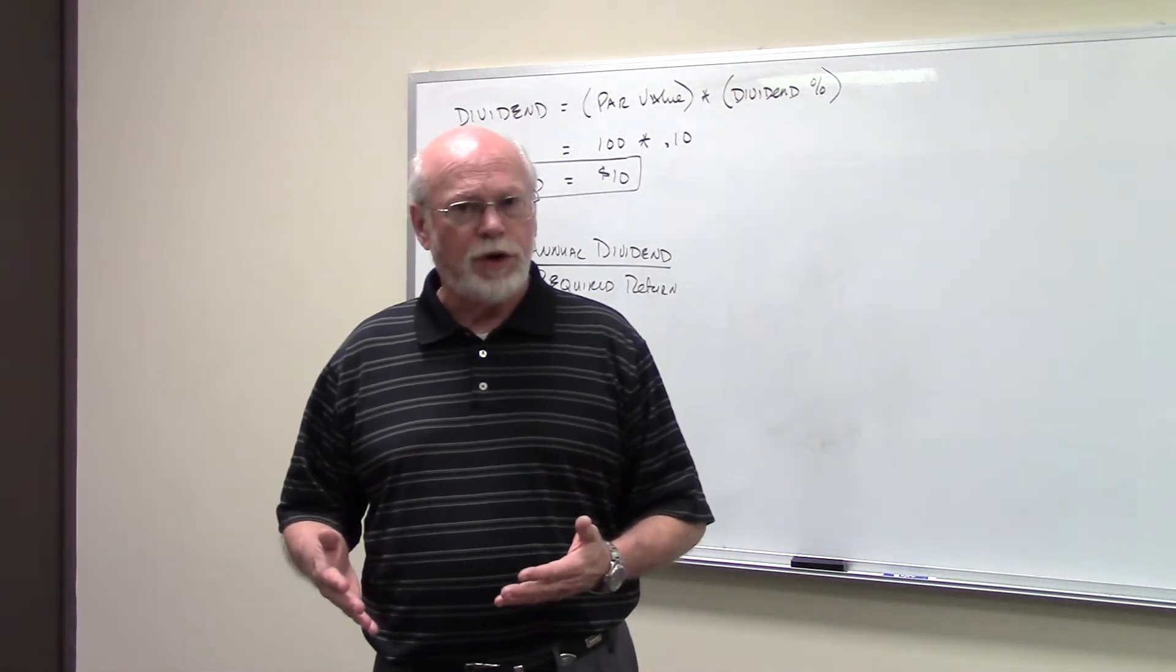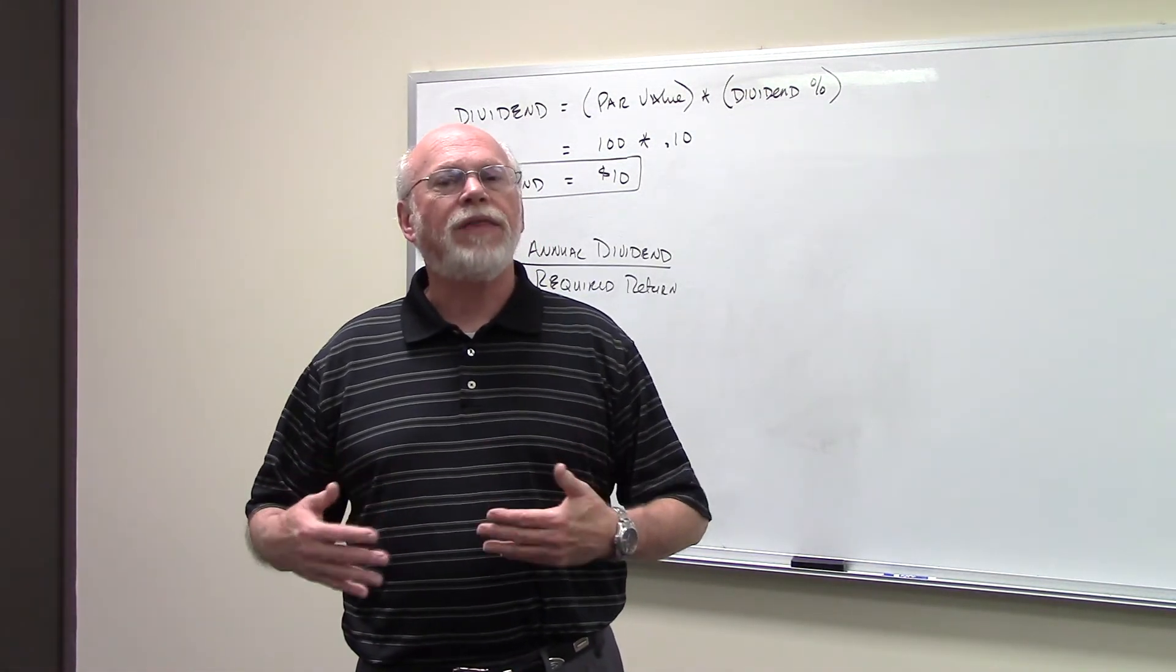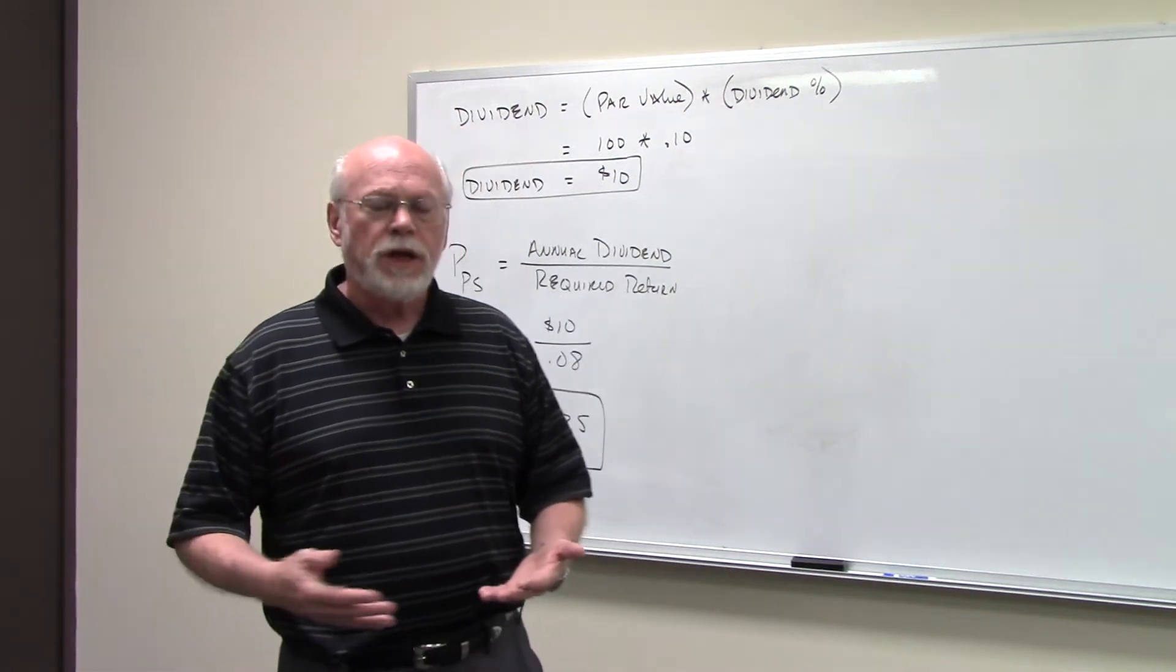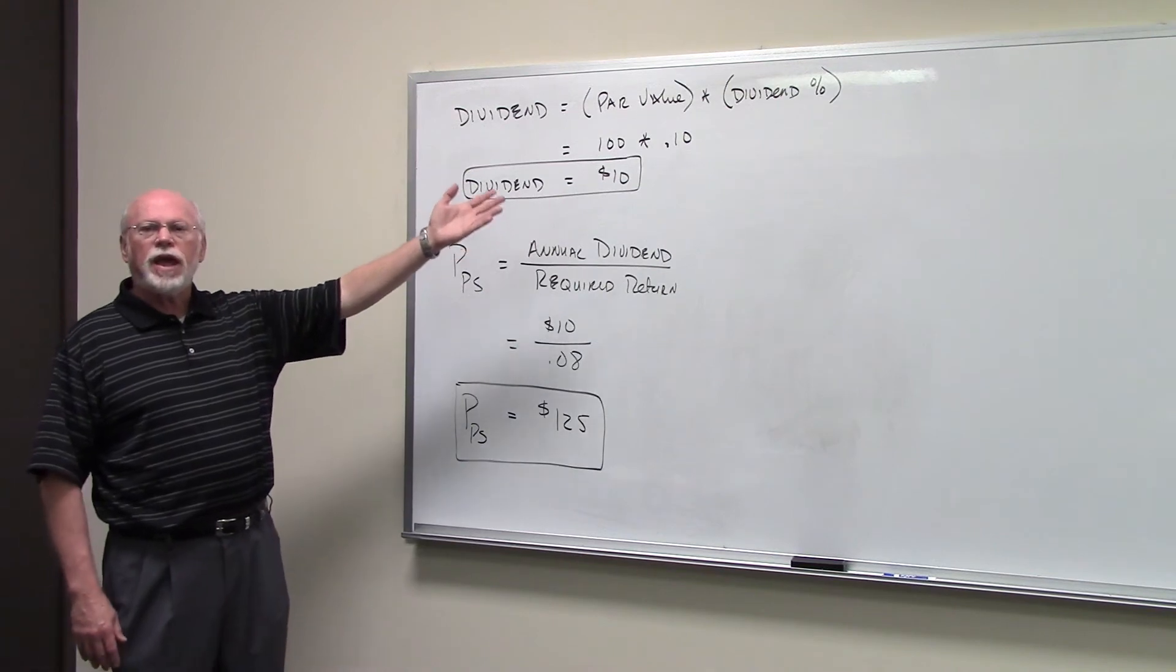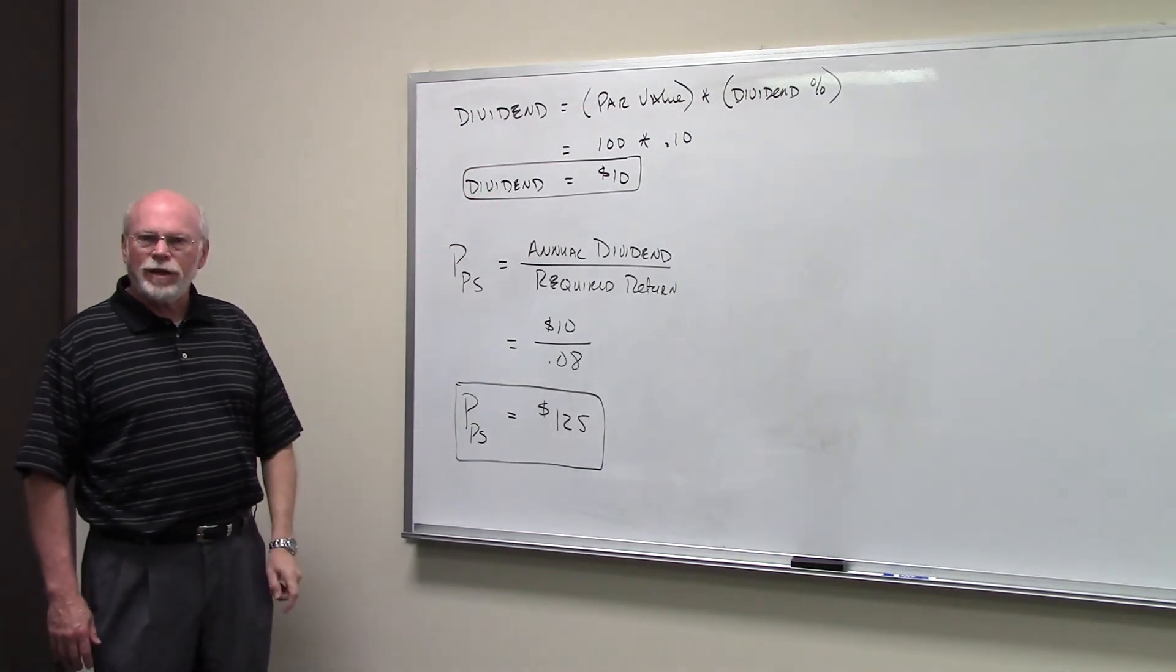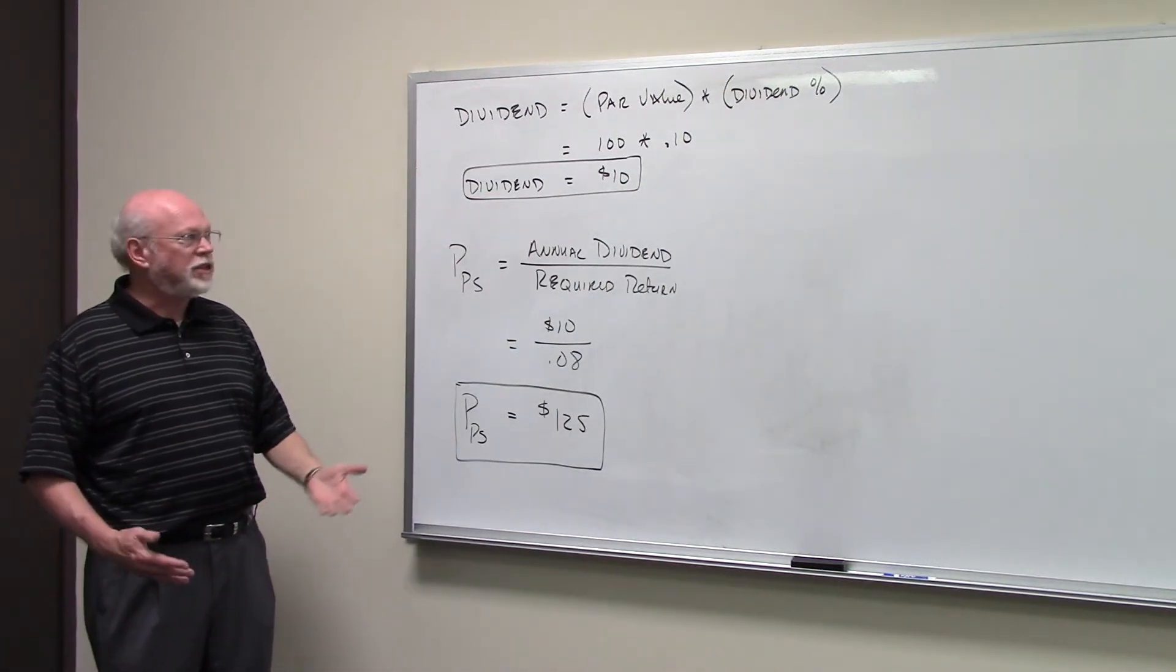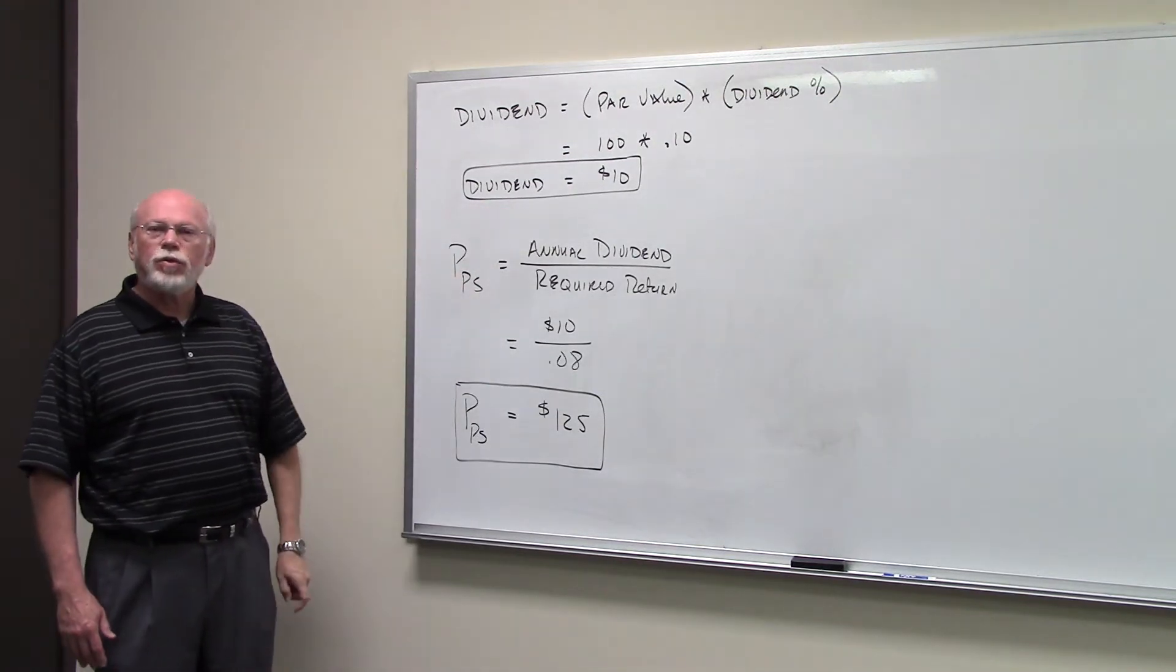So they tell us in the problem that the par value of the preferred is $100 and the dividend rate is 10%. So $100 times 10% gets us an annual dividend of $10.